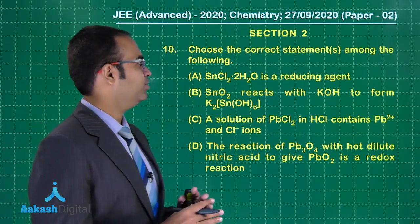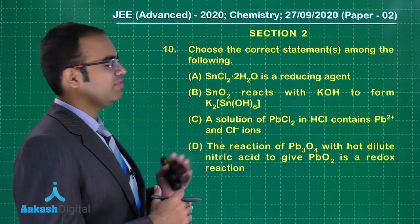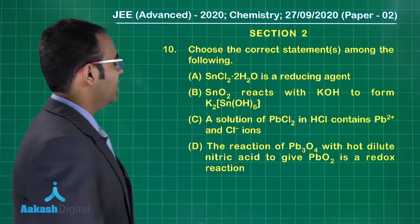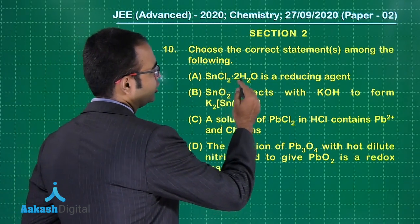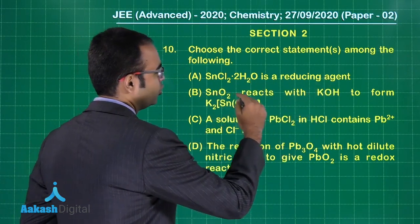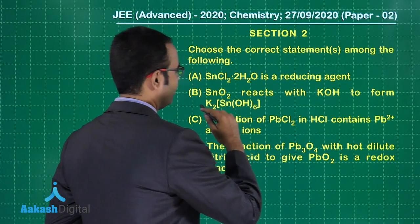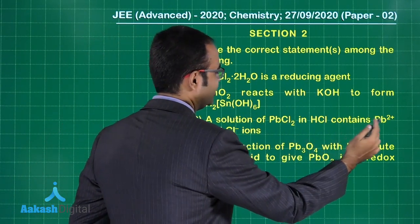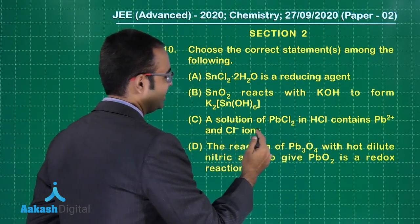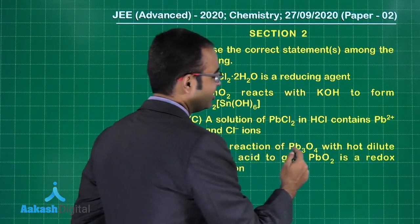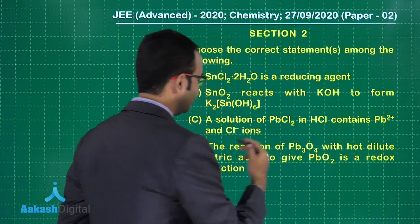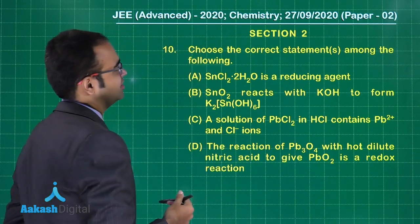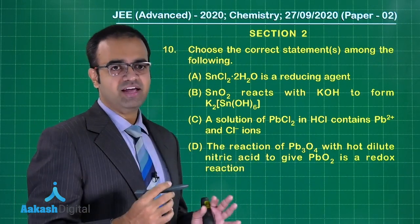Let us solve the 10th question of paper 2, section 2. Choose the correct statement amongst the following: SnCl₂·2H₂O is a reducing agent; SnO₂ reacts with KOH to form K₂Sn(OH)₆; a solution of PbCl₂ and HCl contains Pb²⁺ ions and Cl⁻ ions; the reaction of Pb₃O₄ with hot dilute nitric acid to give PbO₂ is a redox reaction. We have to go through each statement very carefully.